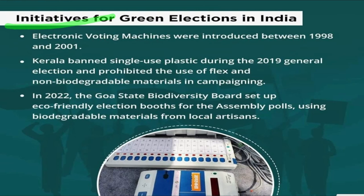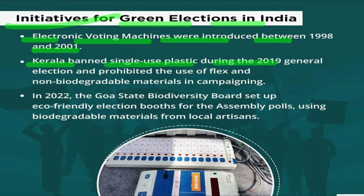Let's look at the green election in India. Electronic voting machines were introduced between 1998 and 2001. Kerala banned single-use plastics during the 2019 general election and prohibited the use of waste and non-biodegradable materials in campaigns.